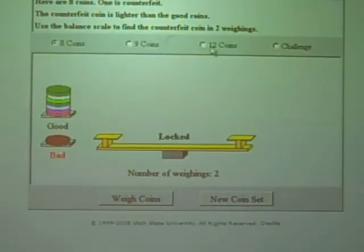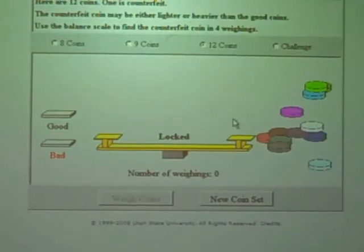Now, let's try a more challenging problem. Let's try 12 coins. And this time, we have 12 coins. 1 is counterfeit, but it could be either heavier or lighter than the good coins. And they're giving us 4 weighings to try and figure it out.